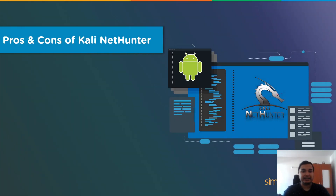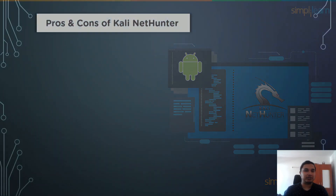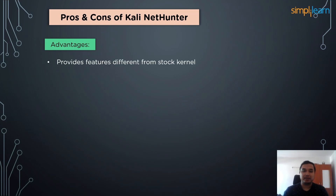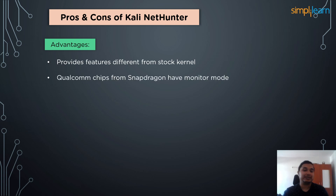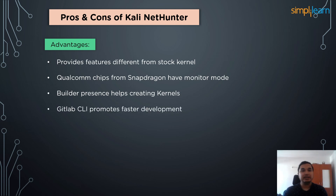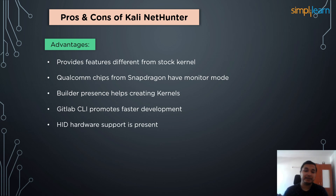Now let's cover the pros and cons of Kali NetHunter. For advantages: NetHunter provides features not included by default in original Android kernels, and the new tools can be used for network penetration and security vulnerability checks. Falcom checks and Snapdragon devices have monitor mode support enabled, which helps listen to wireless traffic and capture data packets. The kernel builder's presence assists in the easy creation of custom kernels, and the use of GitLab CLI speeds up release timelines, making development more collaborative. The Human Interface Device hardware is also fully supported by default.